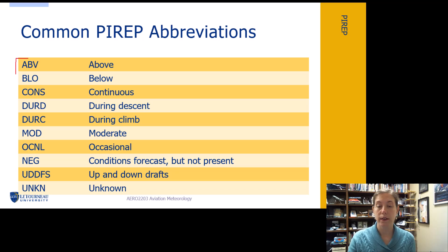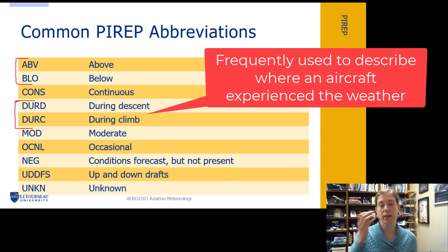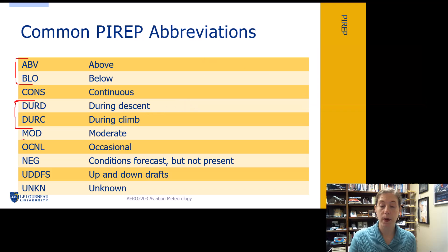Above and below, these we don't find on METARs. Continuous, that's kind of like the one for lightning with the continuous lightning going on around an airport on a METAR. We have during the descent, during the climb. So again, as an aircraft is climbing or descending, it may make a report. We have moderate and occasional. Moderate typically is going to apply to turbulence or icing.